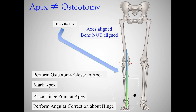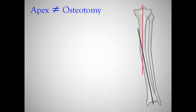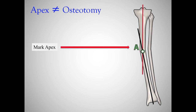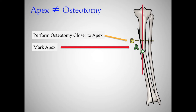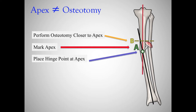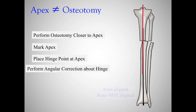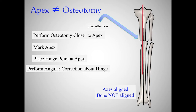How do you predict how much translation you need? You have your apex marked and your osteotomy closer — the distance between the red and black line is going to be the amount of translation that occurs once you do your correction. That can be predicted, and then you can decide if it is going to be acceptable.